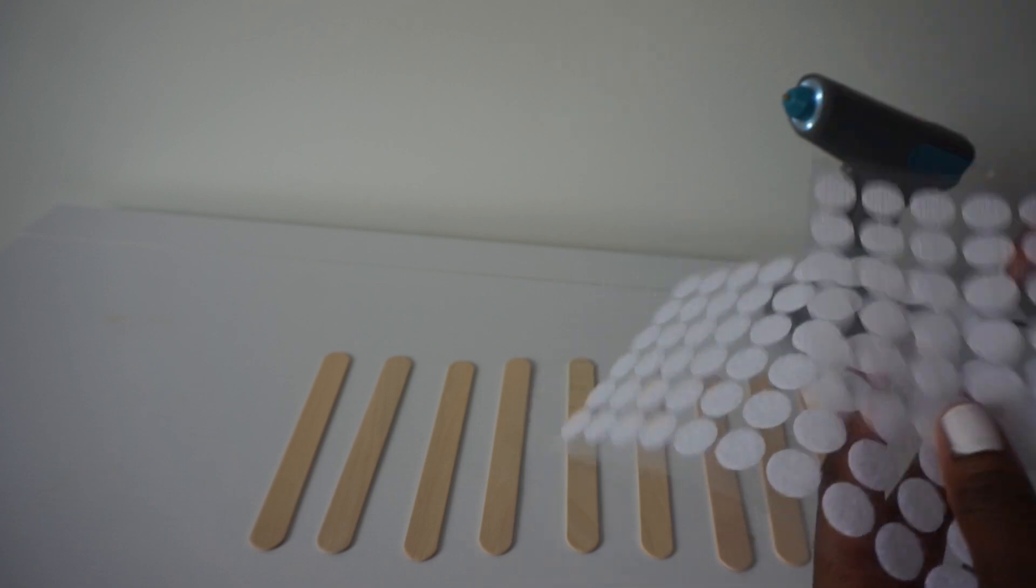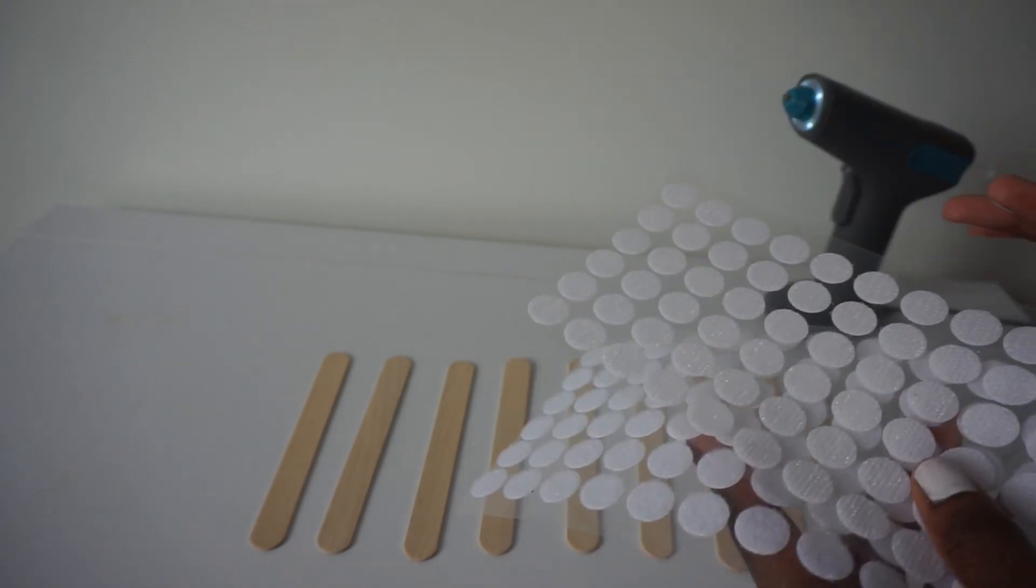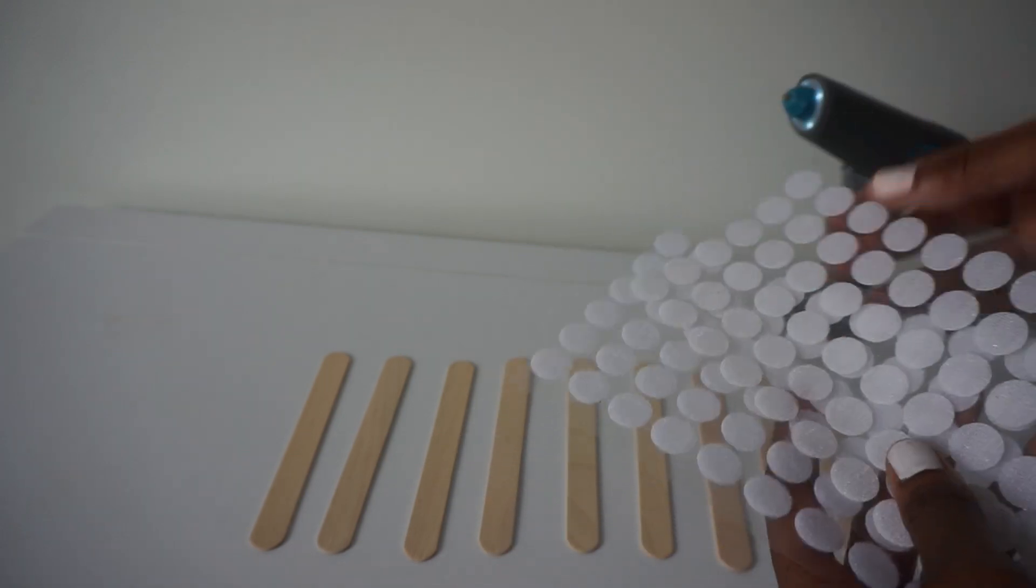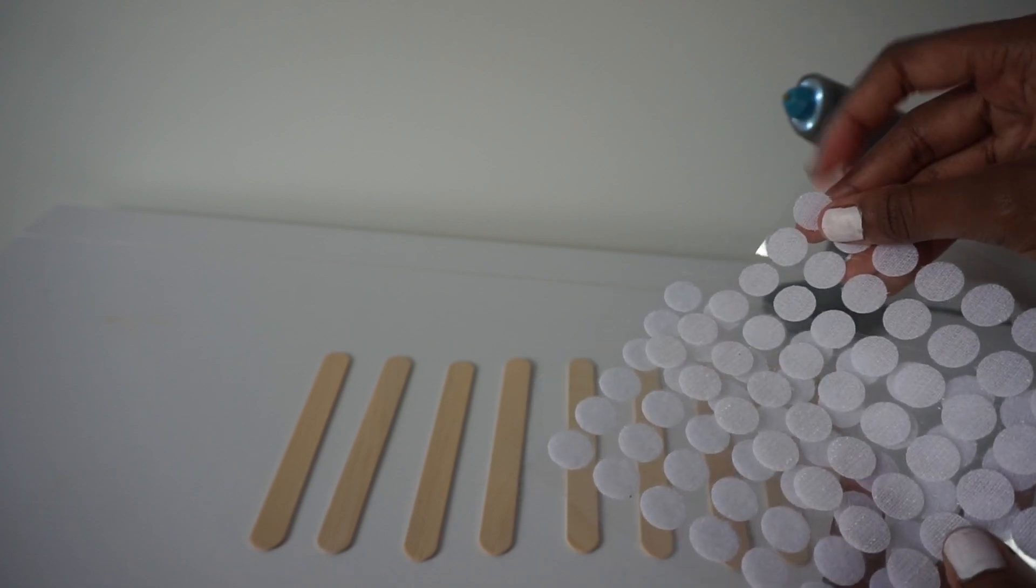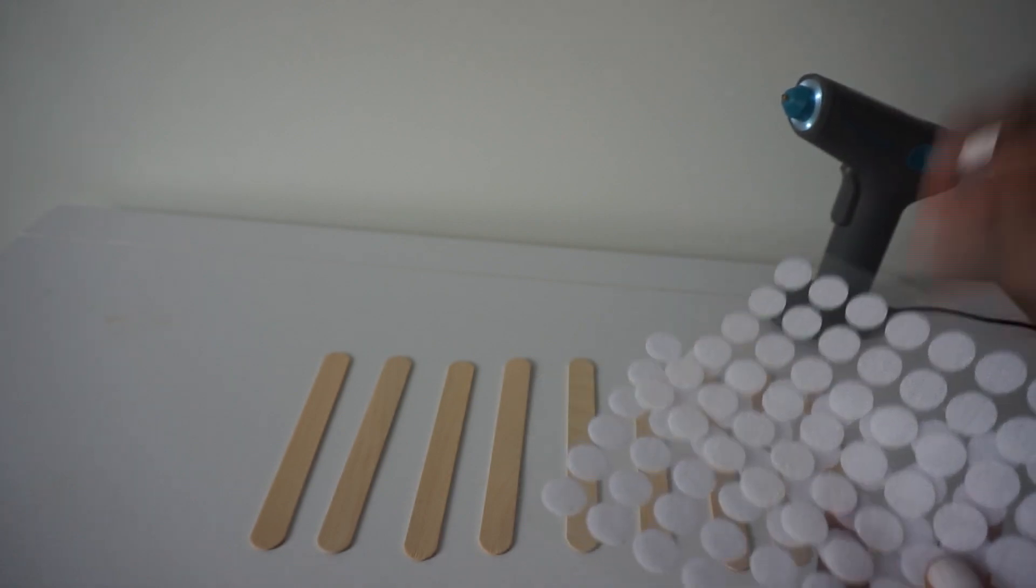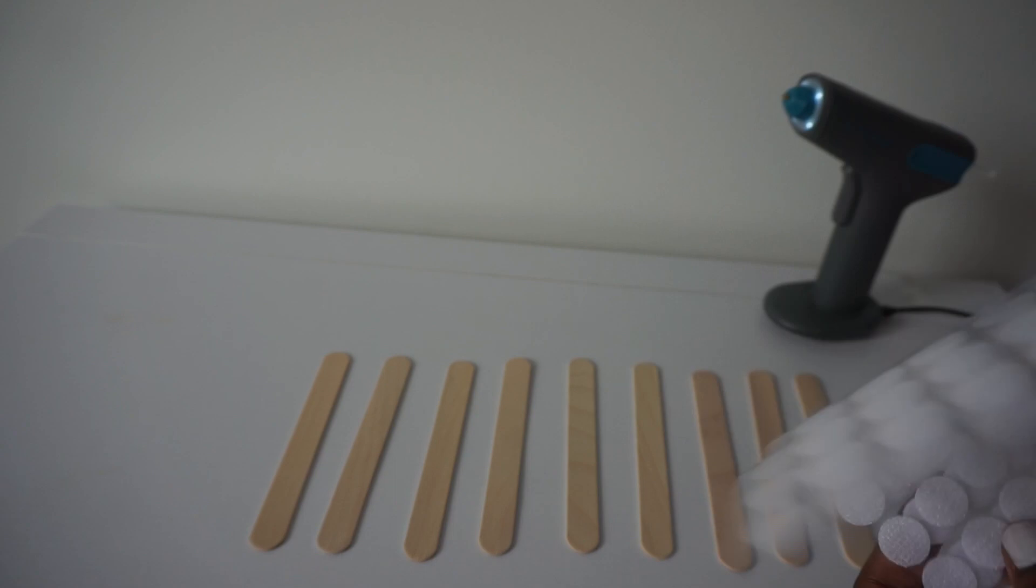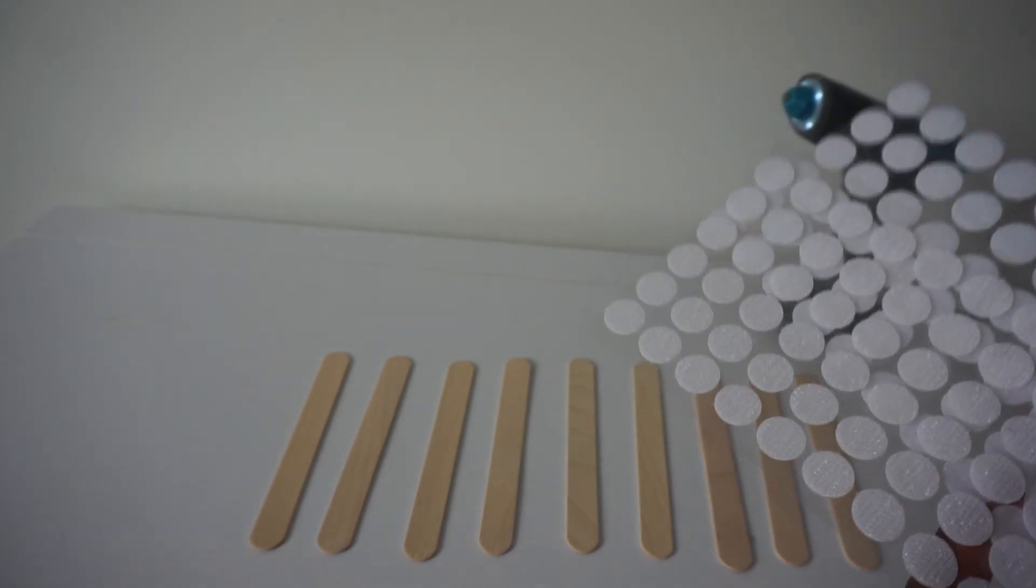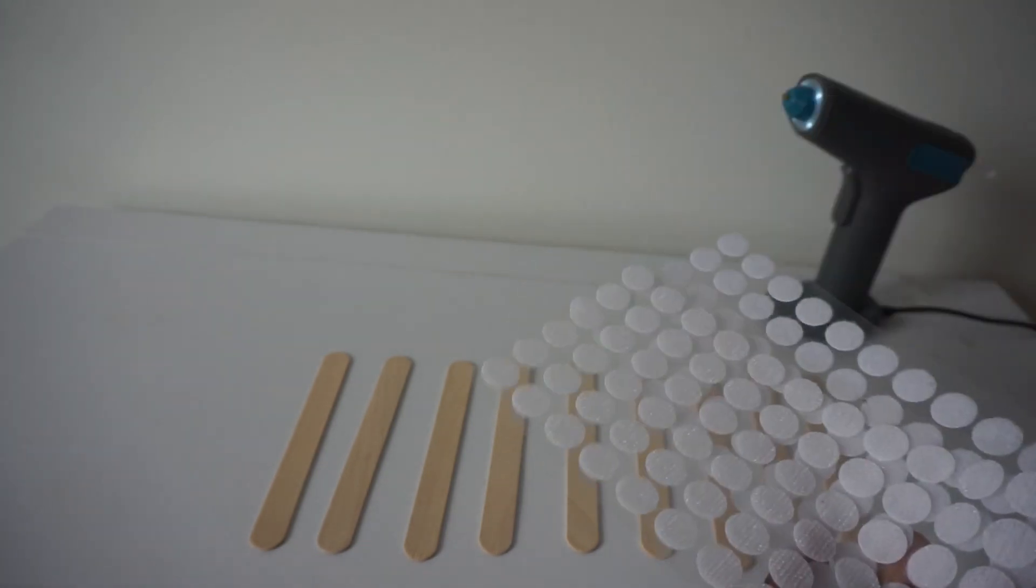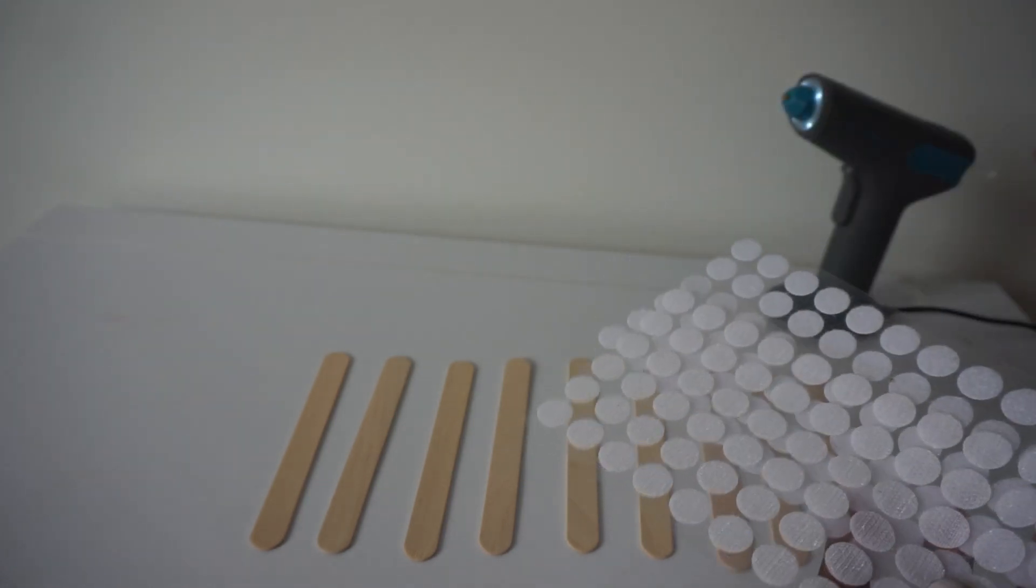The velcro dots are adhesive so they have a sticky side on the back, but I just honestly feel like if this is going to be something that kids are going to be playing with, you want a little more security than just a little stickiness on the back. That's why I'm going to reinforce my velcro dots with the hot glue gun just to make sure they're nice and secure and the kids can play around with them, pull them together, take them apart for hours without them coming loose.